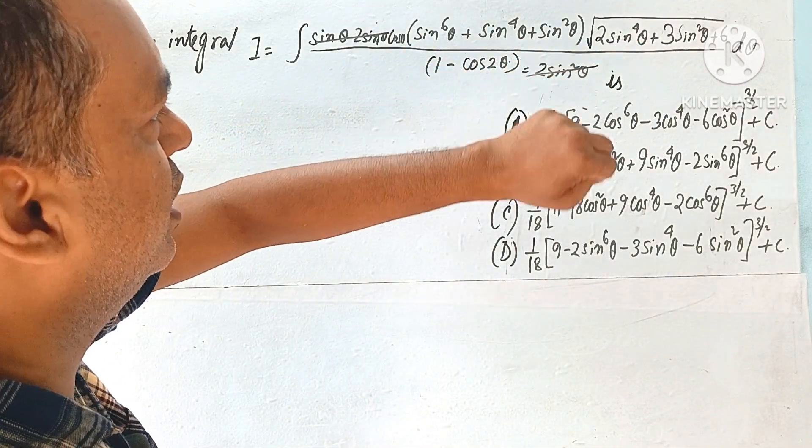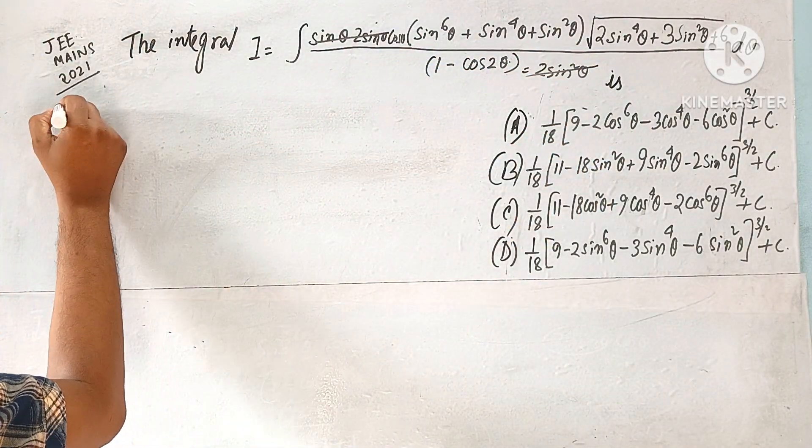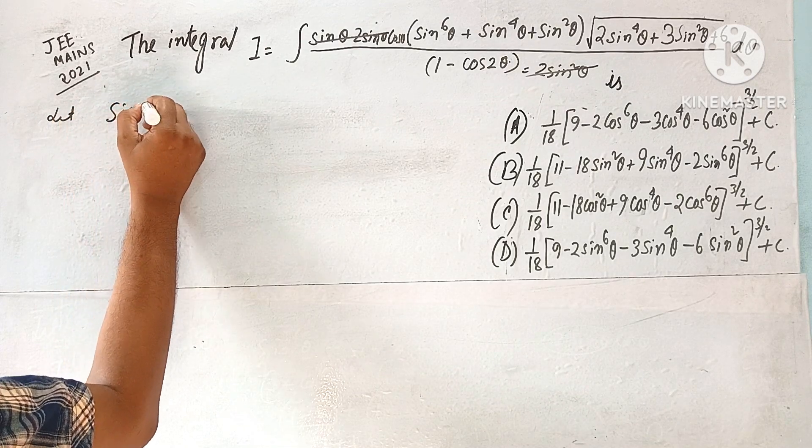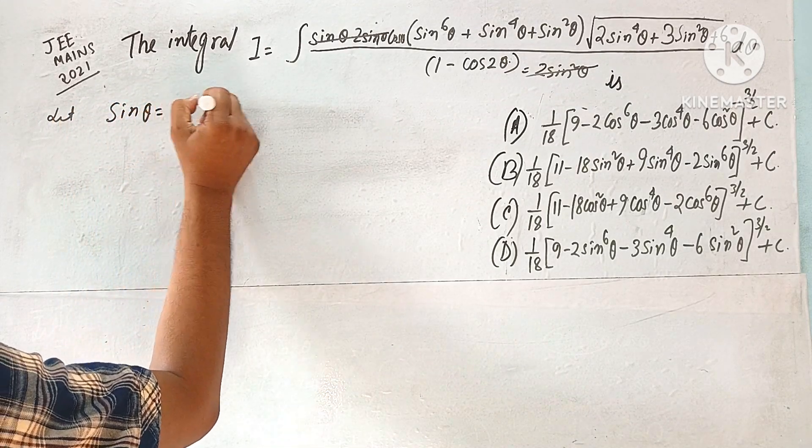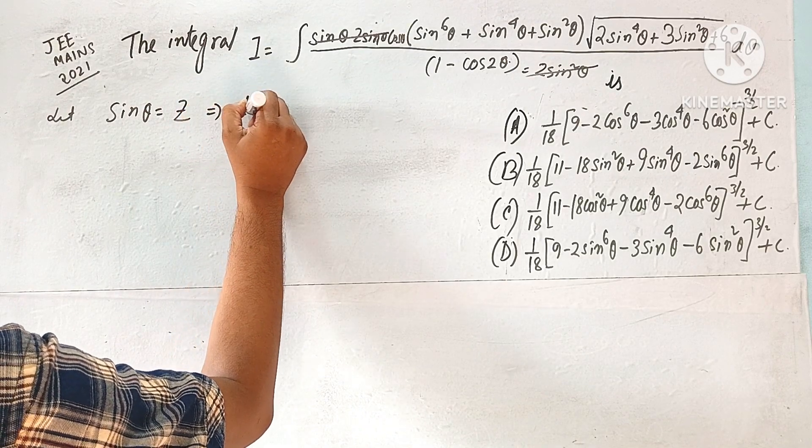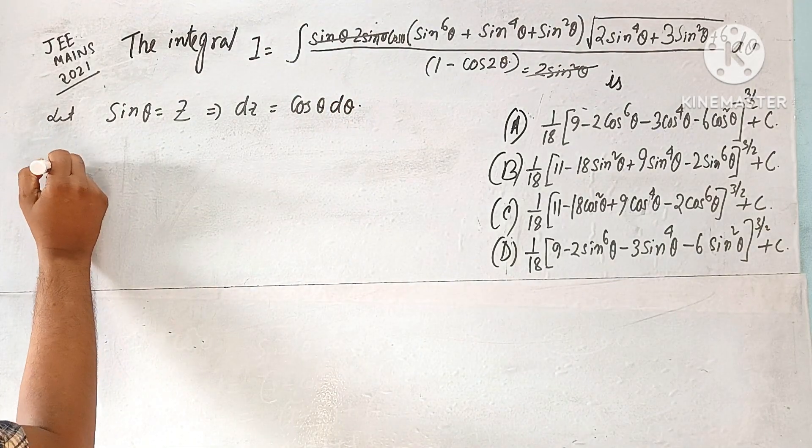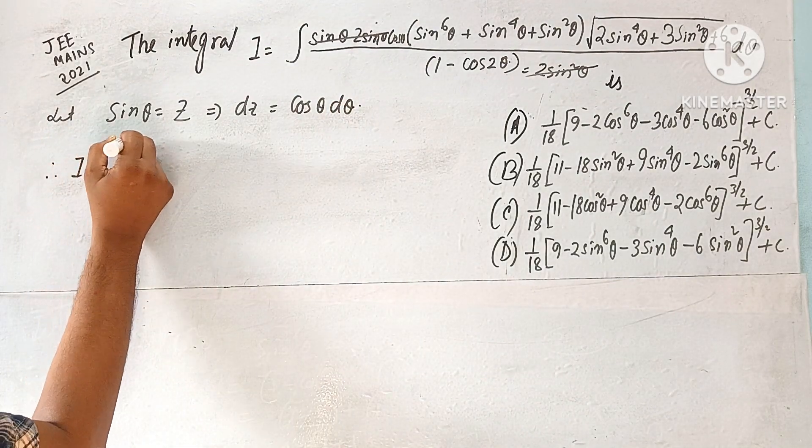So the rest of this problem, we will assume that let sin θ equal to z, when z to dz. Then dz will become cos θ dθ. So the rest of this problem is, what will it be?